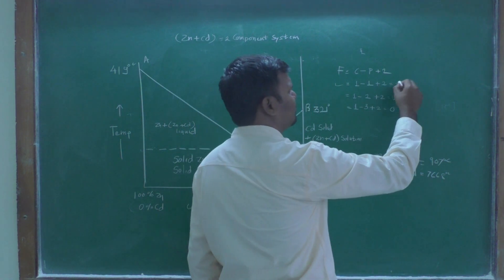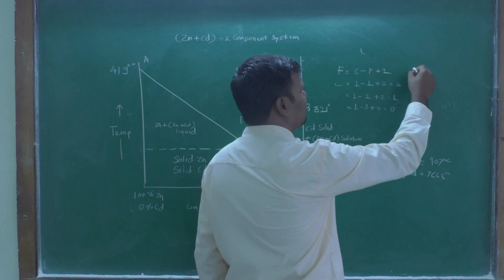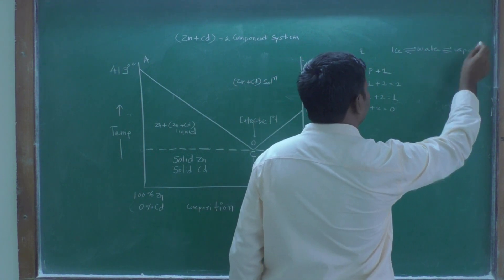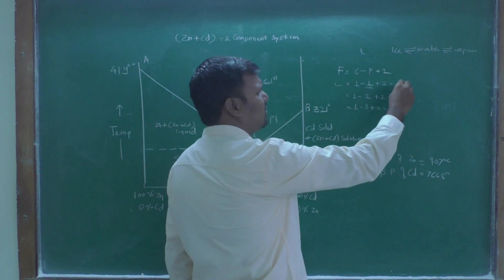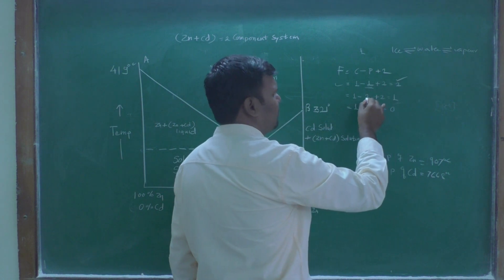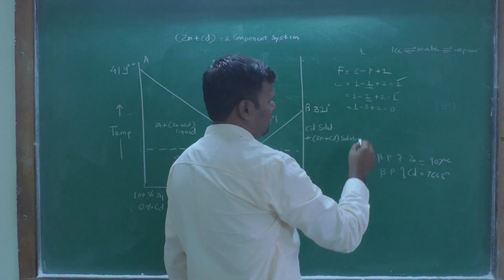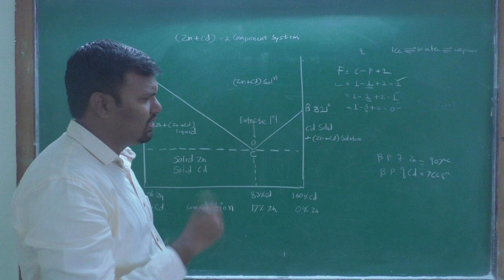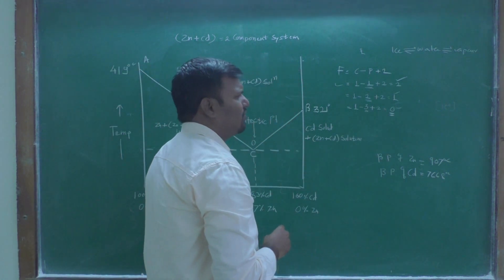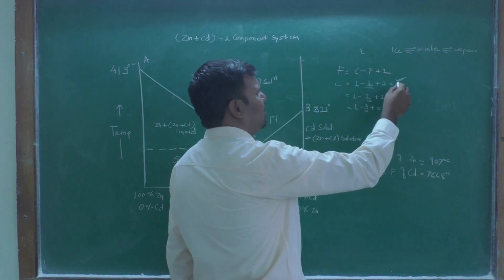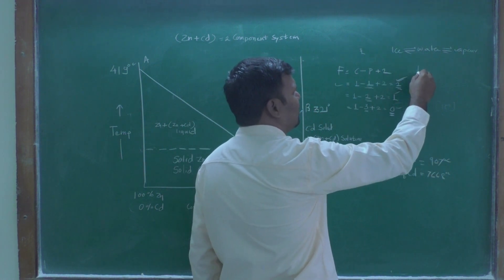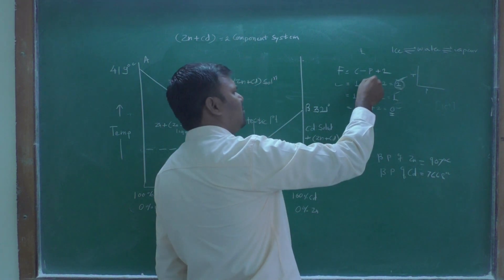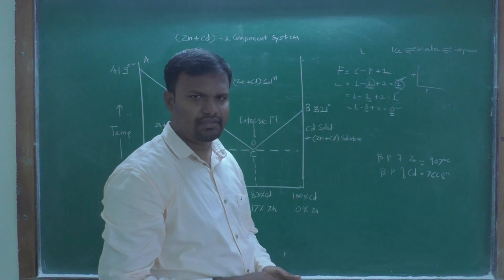For example, ice-water-vapor equilibrium illustrates this. As the number of phases increases, the variables increase but the degree of freedom decreases. As phases increase, degree of freedom decreases. If degree of freedom is two, you need two coordinates — temperature and pressure — to describe the system.